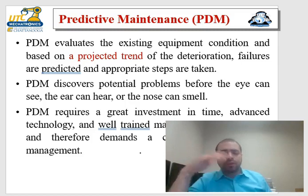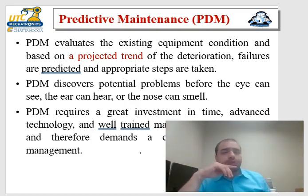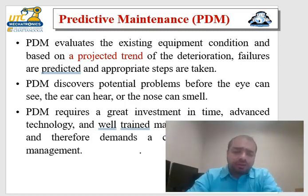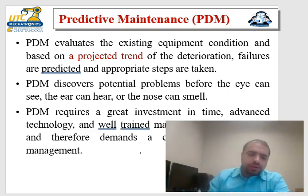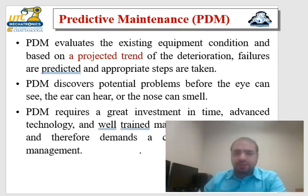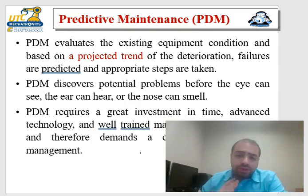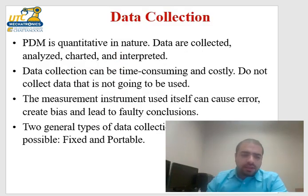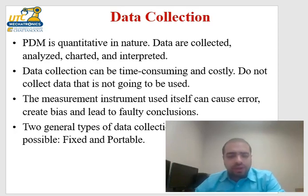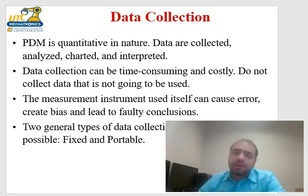These techniques are used to determine chemical compositions of materials and so on. Predictive maintenance is more expensive than preventive maintenance, but it can predict failures before they take place. PDM is quantitative in nature — it's not opinionated, it's driven by data that are collected, analyzed, charted, and interpreted.